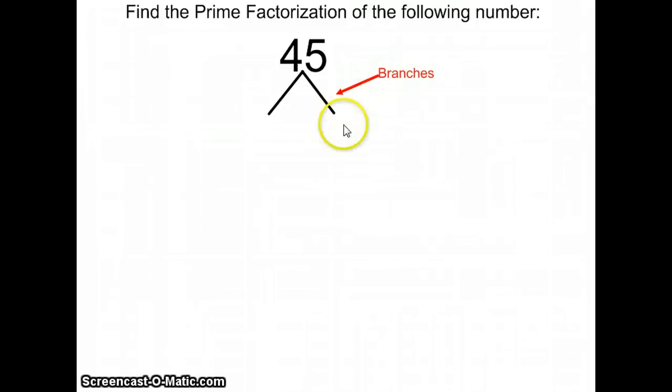At the bottom of the factor tree, of the branches, you're going to want to put two factors that you can multiply together to get a product of the number you're working with. So in this example, I want to use two factors that I multiply together to get 45. To do this, I would have to remember all of the factors of 45.